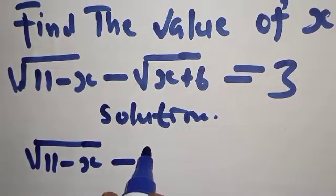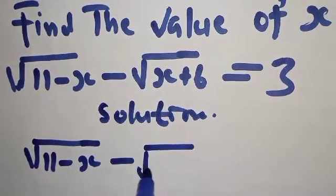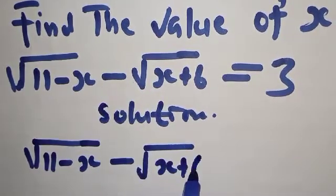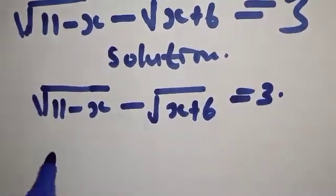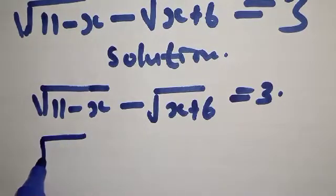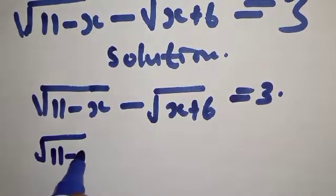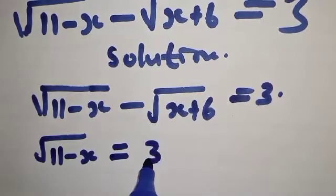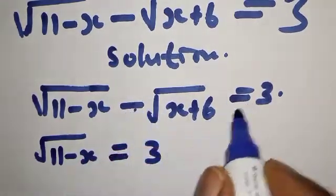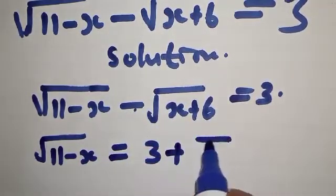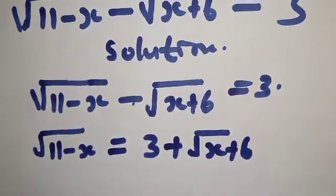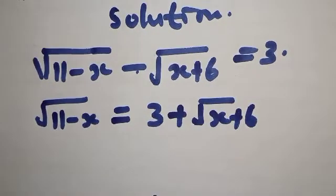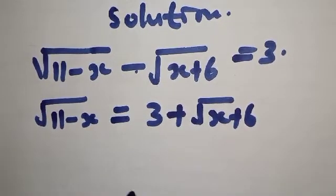The question says: square root of (11 minus X) minus square root of (X plus 6) is equal to 3. This implies that if we rearrange, square root of (11 minus X) equals 3 plus square root of (X plus 6). Then what we do next is square both sides.